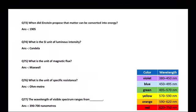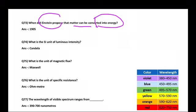Next: When did Einstein propose that matter can be converted into energy? Einstein proposed this in 1905.